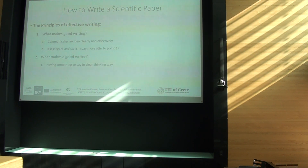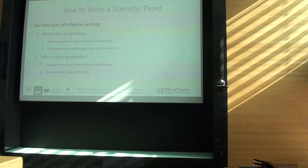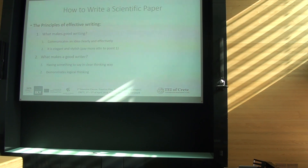What makes a good writer? Have something to say clearly — this is again the motivation. Demonstrate logical thinking: this is a problem, this is the way we address the problem, and this is how we characterize what we are doing. For example, a professor earlier presented different characterization methods for study materials — using Raman, optical absorption, optical emission. This is a coherent way of characterizing materials. And some rules you can learn: we never use passive voice — always use active voice.